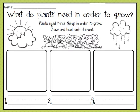So this says plants need three things — three important things in order to grow. Draw and label each element. Okay, so you're going to see three empty boxes — one, two, three. In these boxes, that's where you're going to draw the three different things that a plant needs to grow.